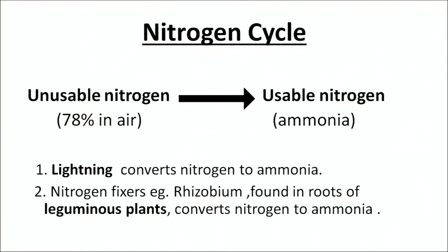Let's come to the nitrogen cycle. The nitrogen in the air, which is 78%, is unusable. To make it usable, it has to be converted from an unusable form to a usable form — this is the role of the nitrogen cycle. This conversion mainly happens in two ways: lightning converts nitrogen to ammonia, and the other mode is nitrogen fixers, namely microbes such as rhizobium found in the roots of leguminous plants, which convert nitrogen to ammonia.